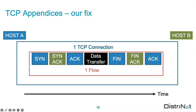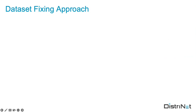Our fix is quite straightforward: we fix the issue with closing of the TCP connection and decide that one TCP connection should ideally be the equivalent of one flow. Now, regarding the dataset fixing approach — obviously we have 500 gigabytes of raw network traffic condensed to 40 gigabytes of network flows, so manual analysis is infeasible. We used a structured and methodological approach to detect, hopefully, almost all of the issues in these datasets.